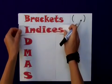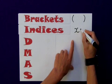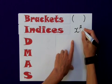The I stands for indices. That would be powers. So say we had X squared. Your indice would be here.